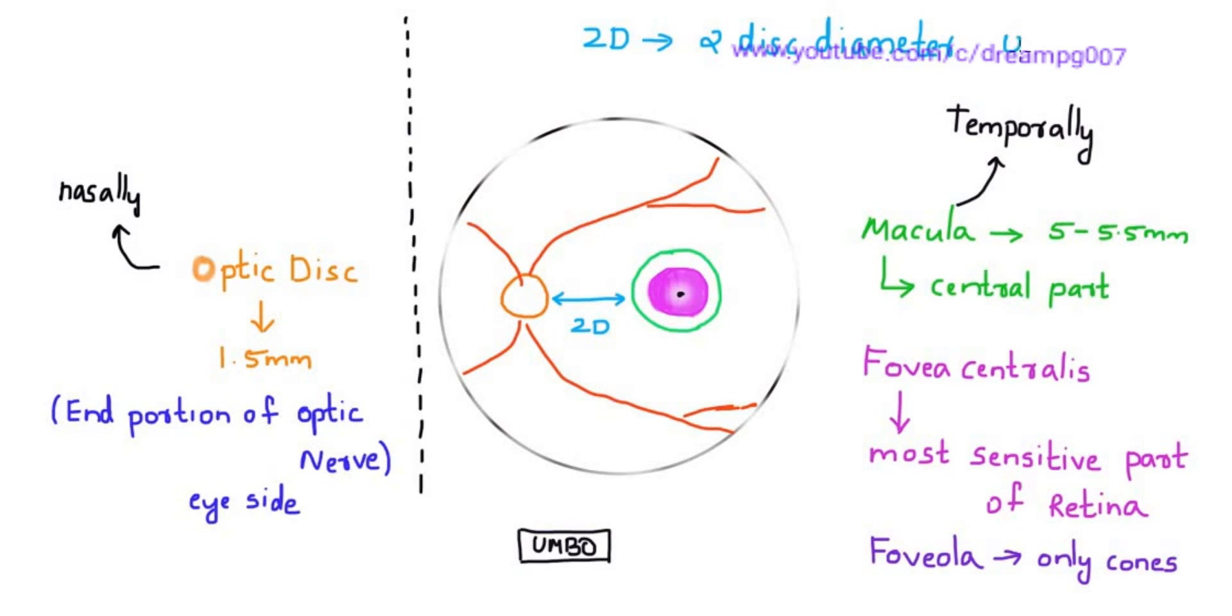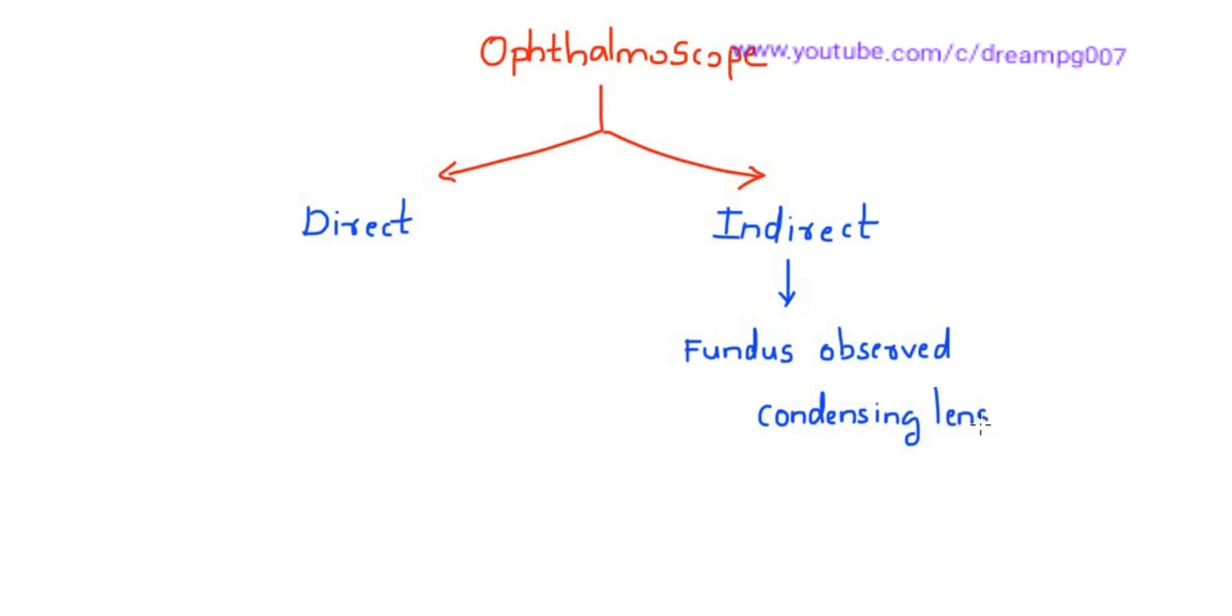Ophthalmoscopy is used to visualize the fundus. There are two types of ophthalmoscopy: direct ophthalmoscopy and indirect ophthalmoscopy. In indirect ophthalmoscopy, fundus is observed with the help of a condensing lens. The power of this condensing lens is plus 20 diopter.